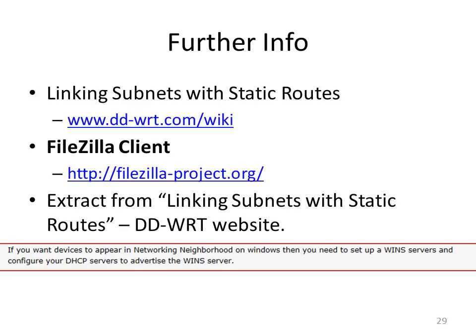For more information, visit the DD-WRT website and look up 'linking subnets with static routes'. To download FileZilla, which is free, use the link shown on the screen. If you're wondering why you can't just drag and drop in Windows, the DD-WRT website explains that you'd need Windows Server — also known as WINS — installed on your machine, similar to Windows Home or Windows Enterprise edition. That's why you can't just drag and drop. I hope this presentation was useful and I hope you check out the other two videos in the series. Thank you.